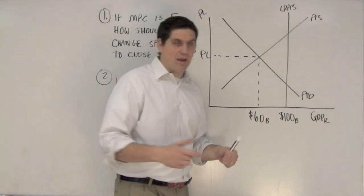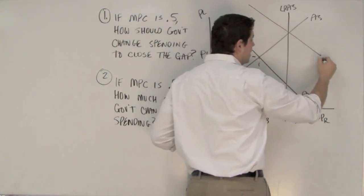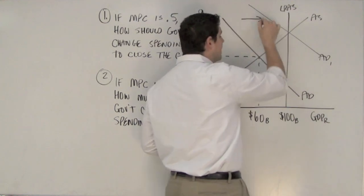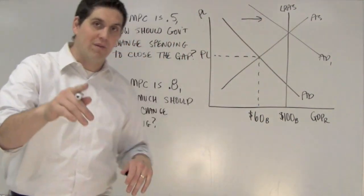Here's what we're trying to do. Increasing government spending would shift aggregate demand to the right, closing the gap. The question is how much spending. Use the multiplier. Alright, give you some time.